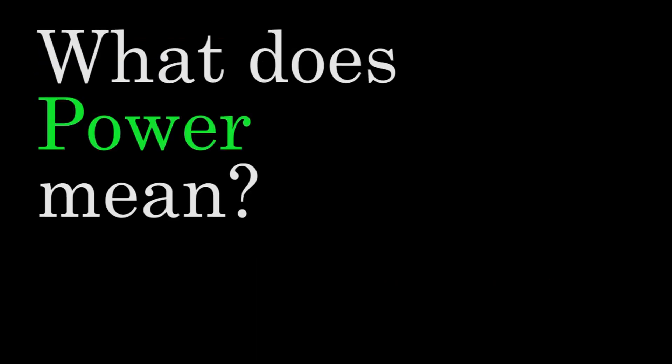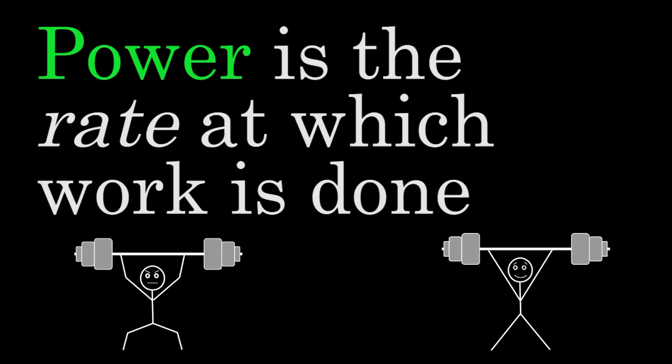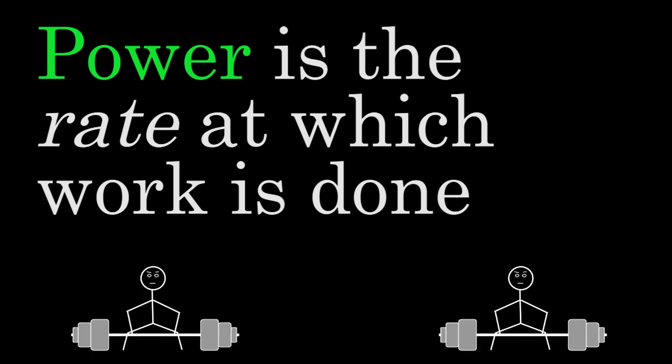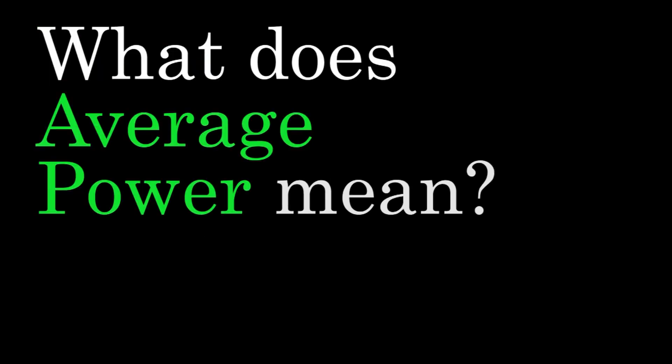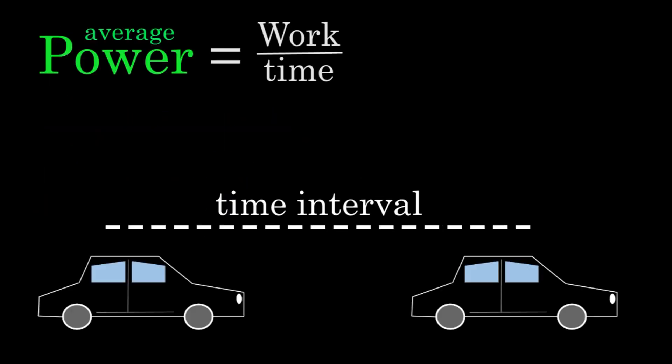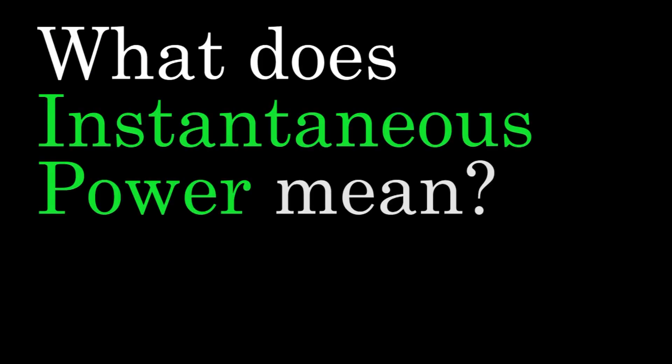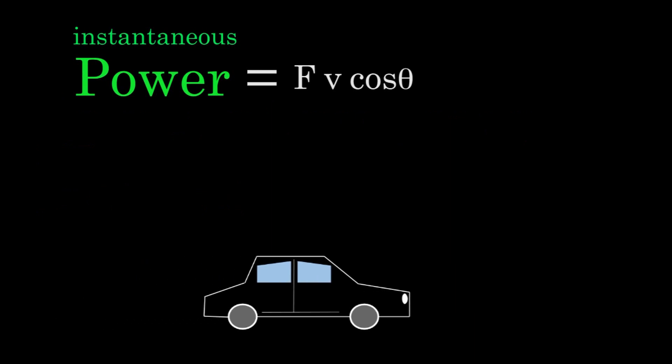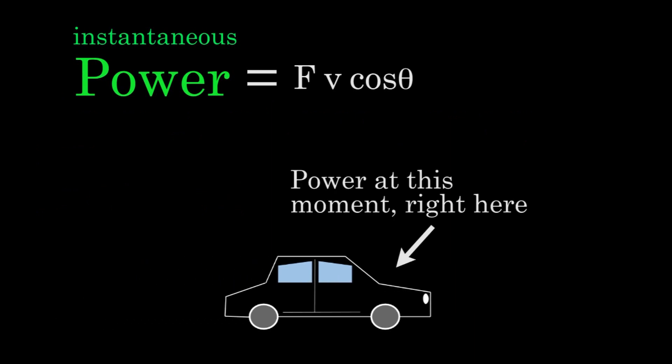Alright, so what does power mean? Power is the rate at which work is done. What does average power mean? Average power is the work done over a given time interval. What does instantaneous power mean? Instantaneous power is the power output of a force at a particular moment in time.